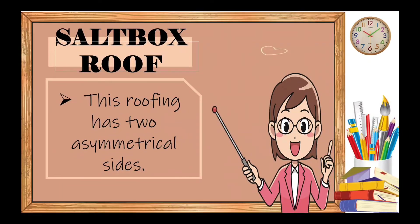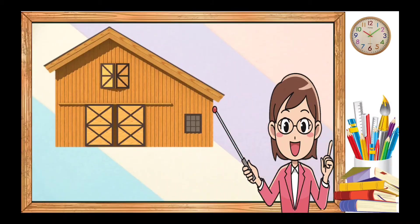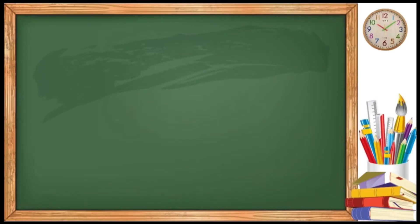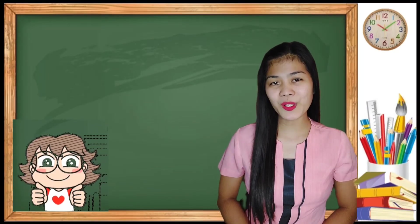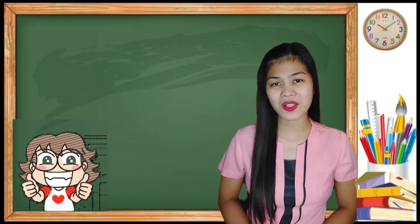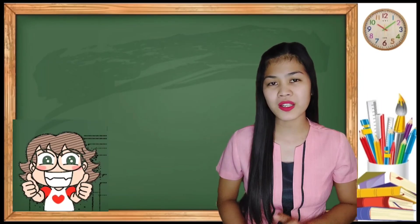Lastly, we have saltbox roof. This roofing has two asymmetrical sides that are easily identified by their signature one-sided slope roof lines. Isn't it great? We're already done discussing our lesson about the types of roof.